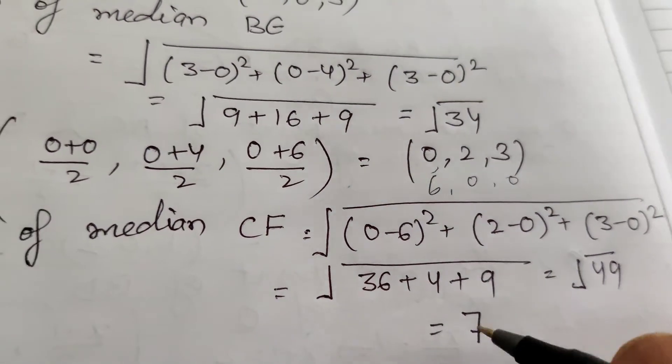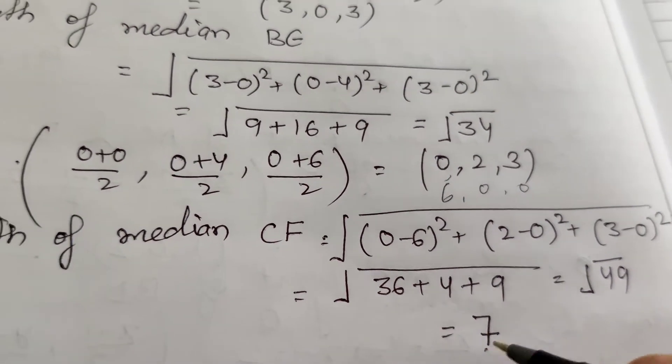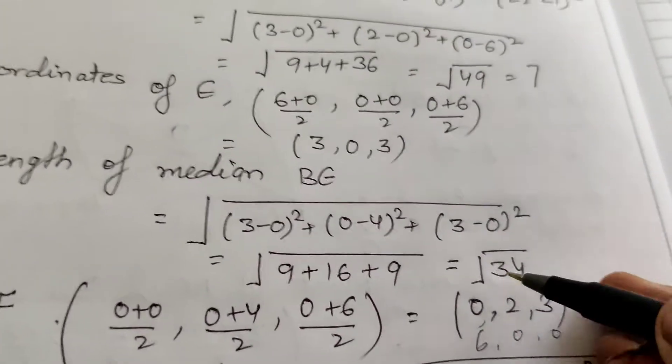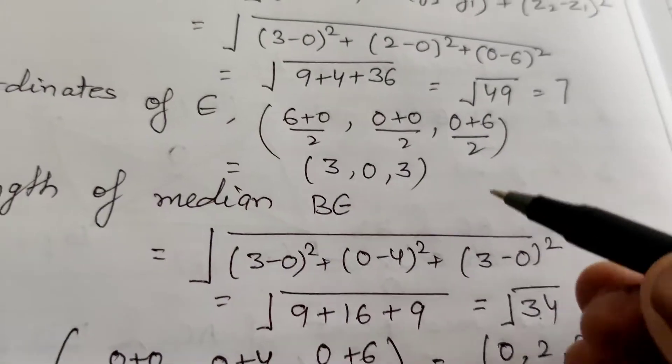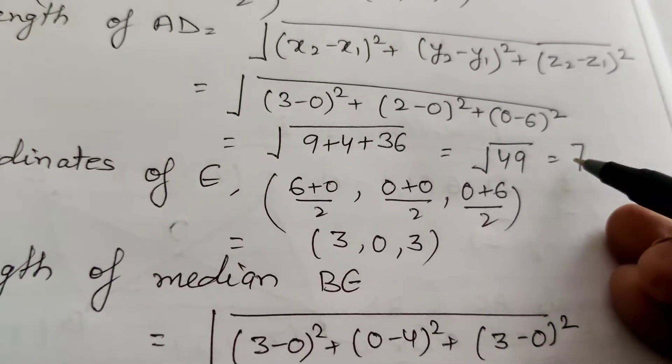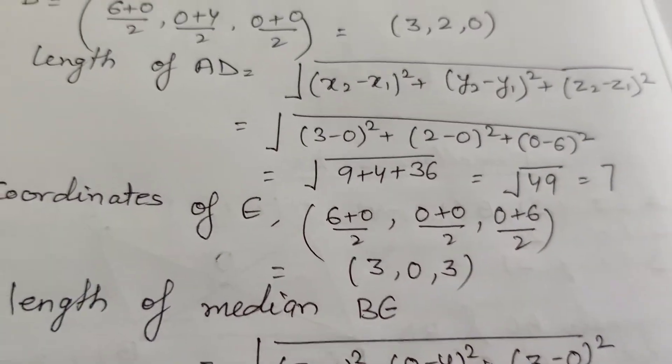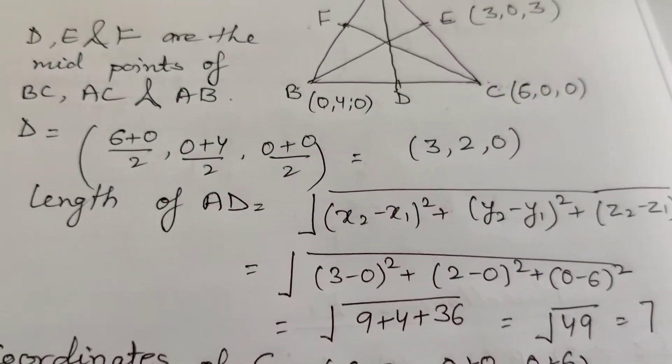All three medians calculated. First median AD = 7, second median BE = √34, and third median CF = 7.